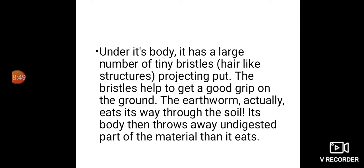By repeating such muscle expansions and contractions, the earthworm moves through soil. Its body secretes a slimy substance to help movement. Under its body there are tiny bristles — hair-like structures projecting out — connected to muscles, helping it grip the ground. The earthworm eats its way through soil, throwing away undigested material. This makes the soil more useful for plants.